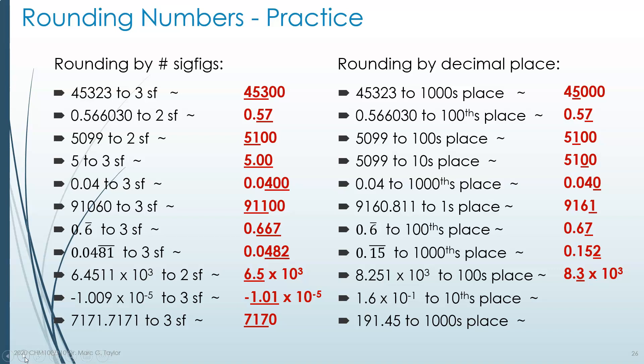1.6 × 10⁻¹ to the tenths place. Anytime you have a decimal-place question but your number is in scientific notation, convert to decimal first. 1.6 × 10⁻¹ = 0.16. The tenths place holds a 1, and the next digit is 6, so we round the 1 up to a 2. The answer is 0.2, or 2 × 10⁻¹.